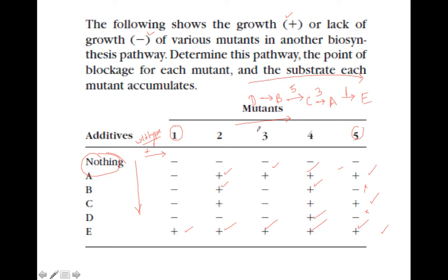For mutant number 2: if you provide A, B, or E it will grow, C it will grow, but D it will not grow. This means this mutation belongs between B and D. So if you provide B, C, A, or E it will grow, but if you provide D it will not grow because D will not convert into B.